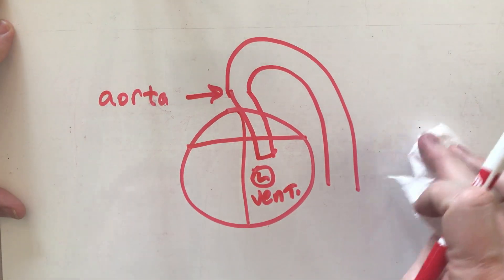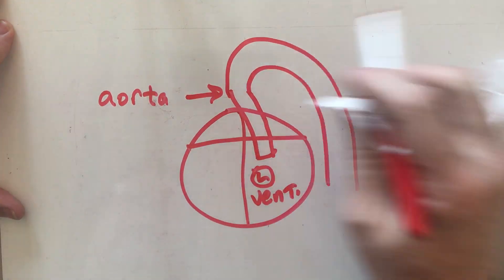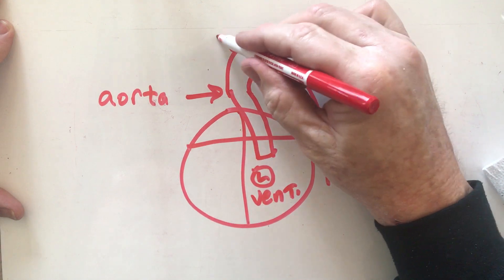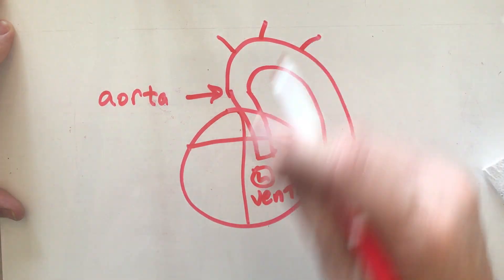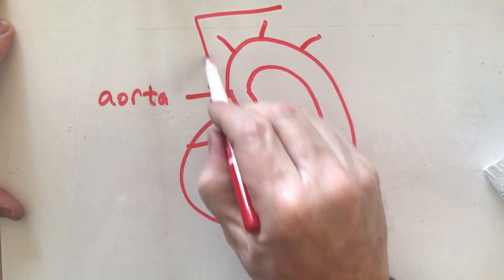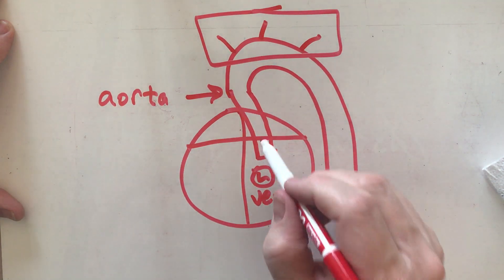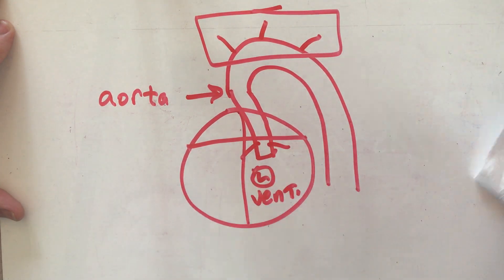We're going to look at the branches coming off the arch — one that goes this way, this way, and then out this way, and also some that come off down here. I'm going to draw the aortic arch kind of small because I need a lot of room up here, so if you're drawing on your paper make sure you leave a lot of room at the top.